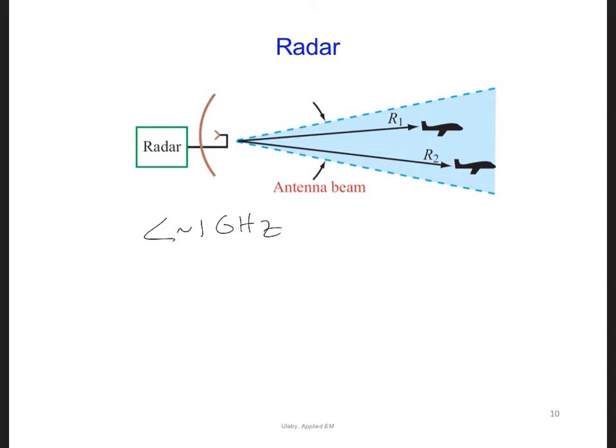Applications of radar include detecting the presence of aircraft, ships, motor vehicles, and even tunnels underground. Here is an image of a BASEC radar system being used to detect the presence of two airplanes in the sky.